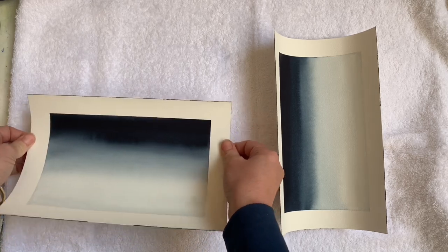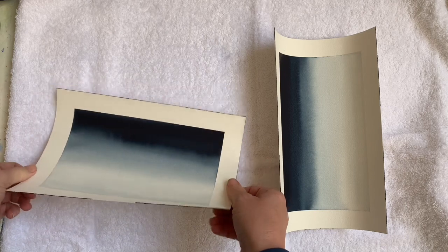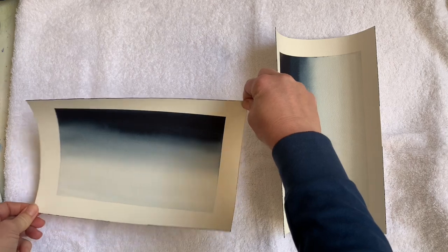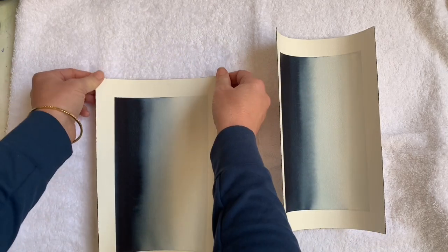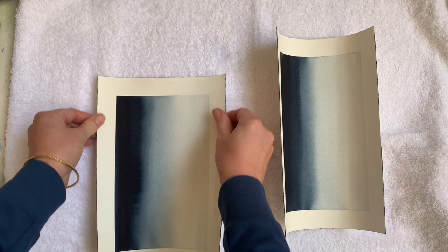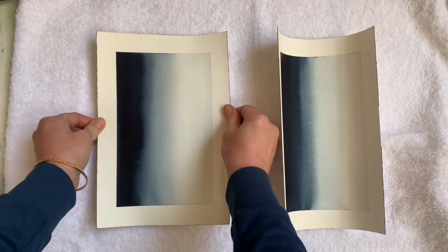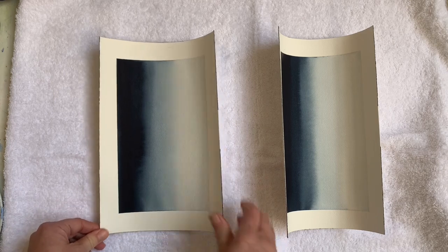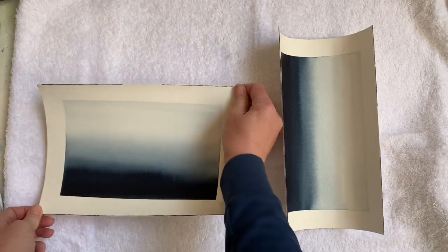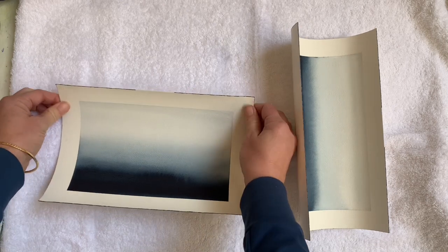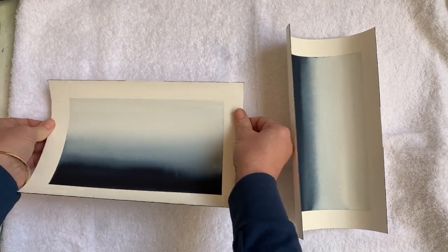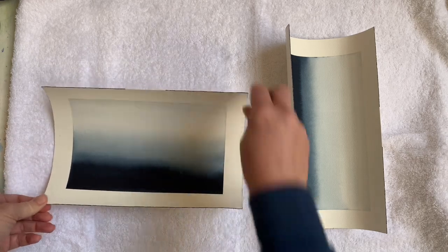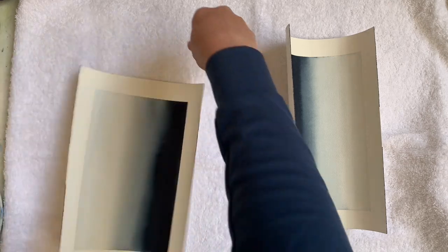You go across one side, not too strong, you're just wanting to help those fibers to expand and then you pull it across again. Then you repeat this: you go down one side, across an angle twice, and then down the other side and then across the diagonal on both sides.